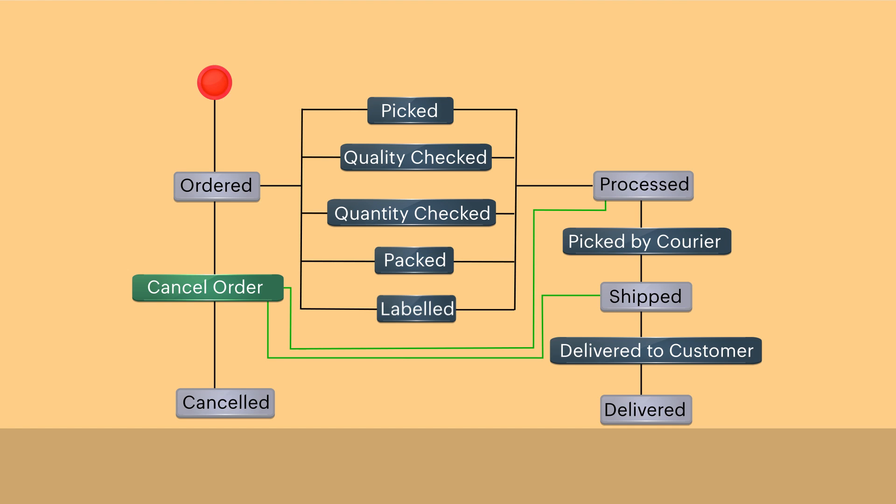For parallel transitions, you can set relevant transition owners: warehouse executives for picking and packing, quality assistants to validate quality,